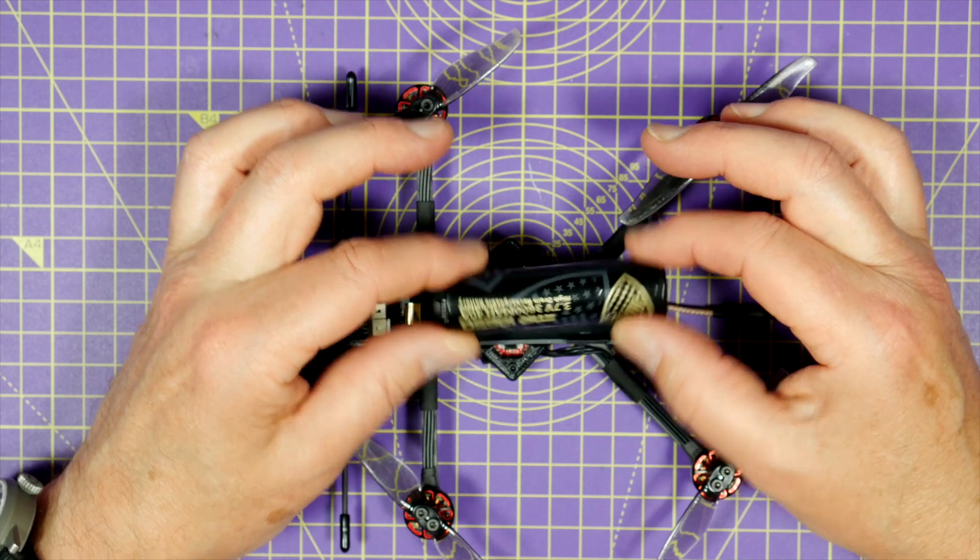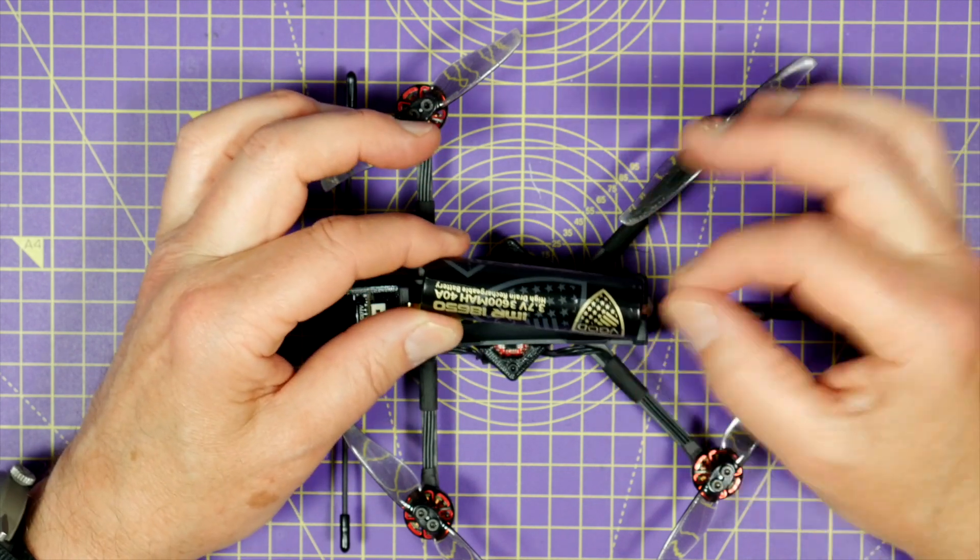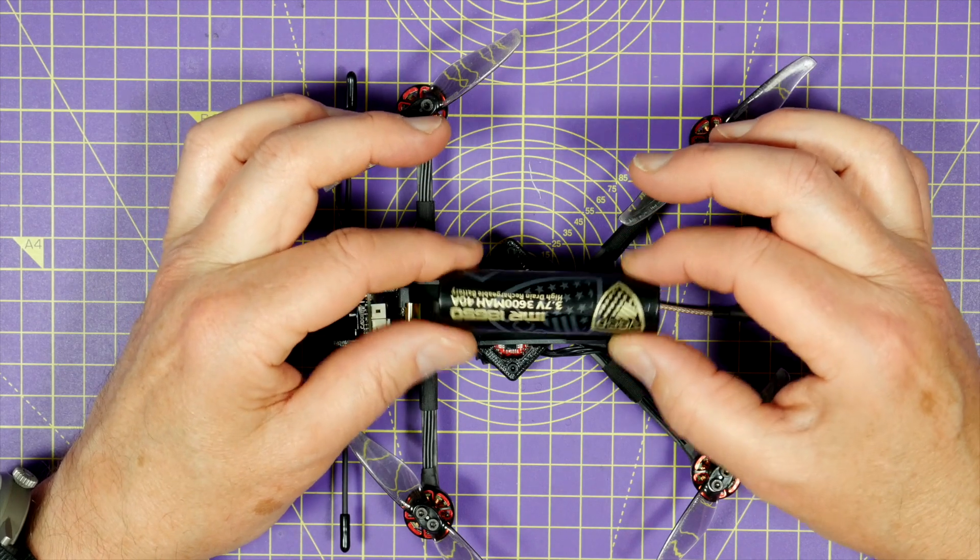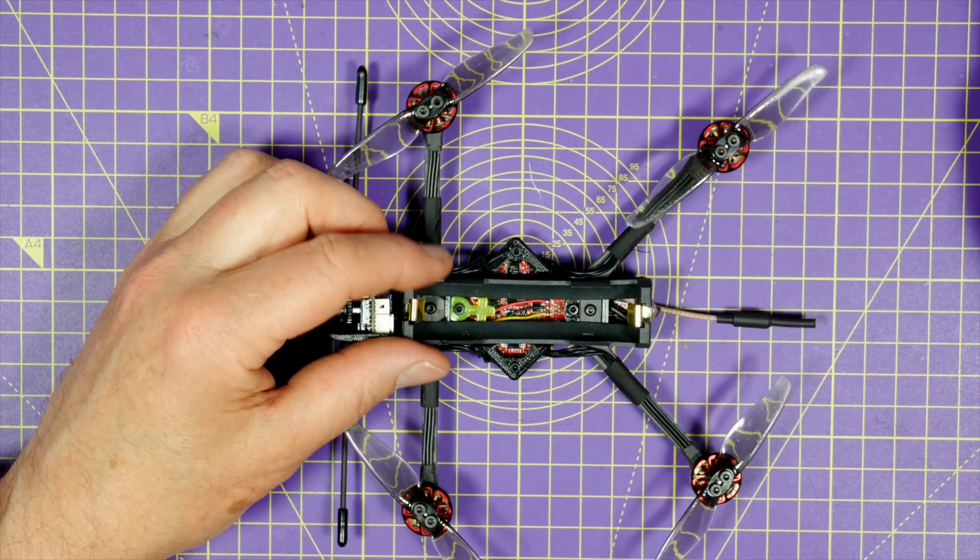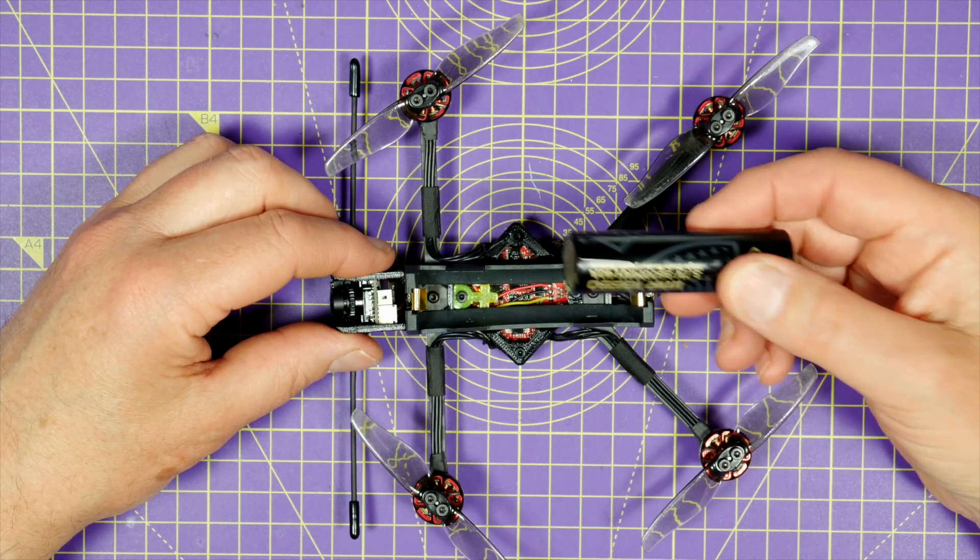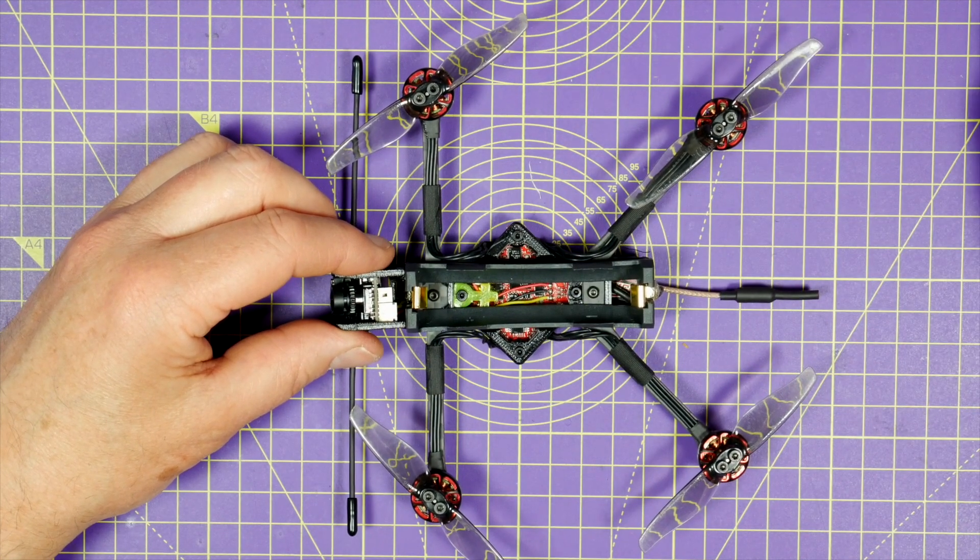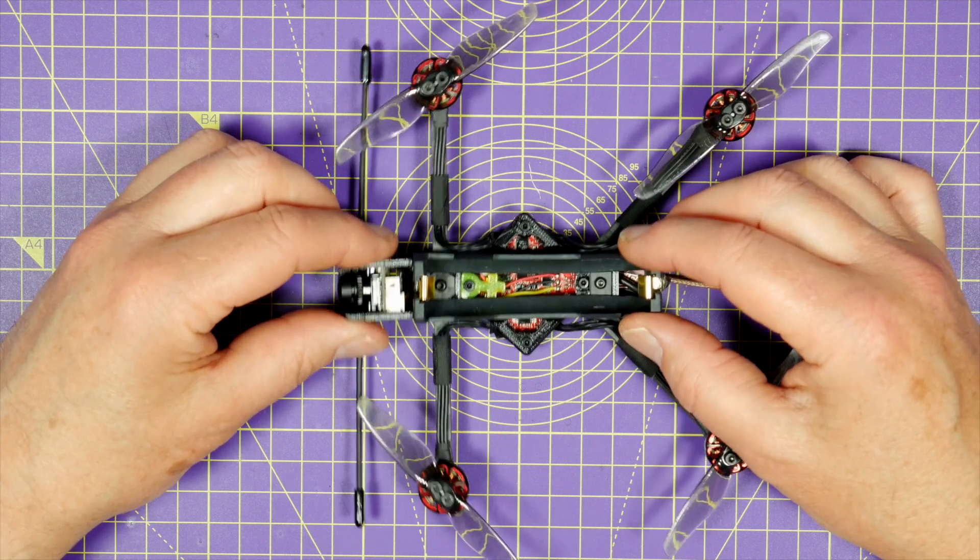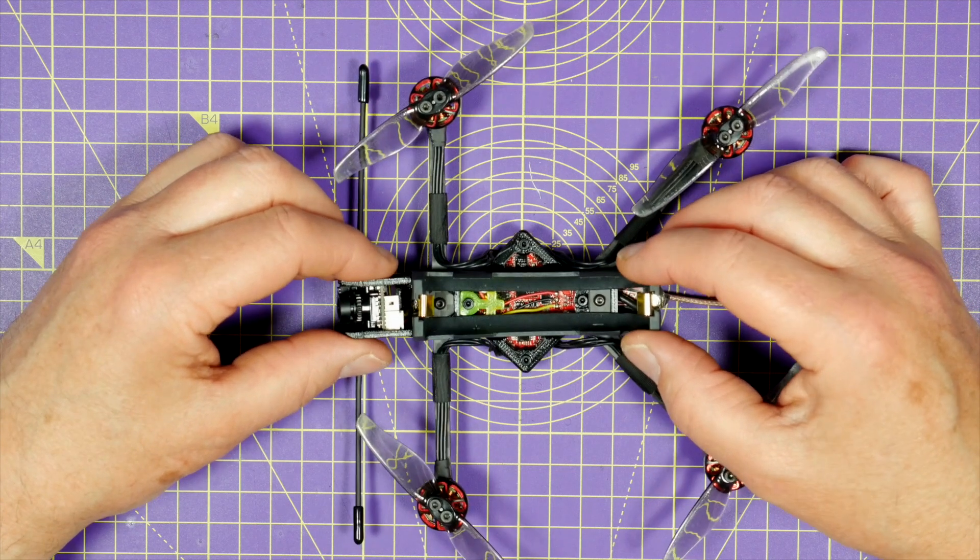If they dip below 3 volts, just back off the throttle for a few seconds and you'll find it'll recover. And if you start throwing this around with hard throttle punches and acro, these will die quite quickly. But that's not what this little quad is about. It's for long-range and long-distance cruising.